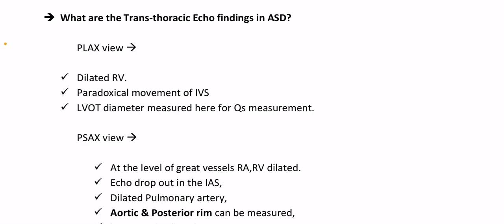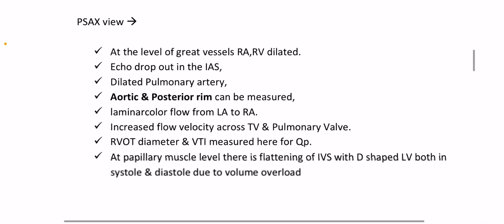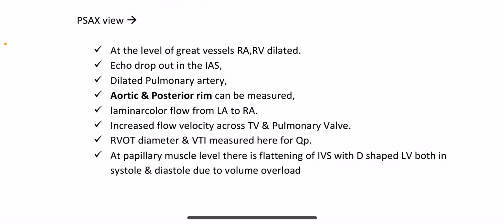Parasternal short axis view at the level of the great vessels shows dilated RA and RV; echo dropout in the interatrial septum; dilated pulmonary artery; aortic and posterior rim can be measured; laminar color flow from LA to RA; increased flow velocity across the tricuspid and pulmonary valves; RVOT diameter and VTI measured for Qp. At the papillary muscle level, there is flattening of the interventricular septum with a D-shaped LV in both systole and diastole, due to volume overload.